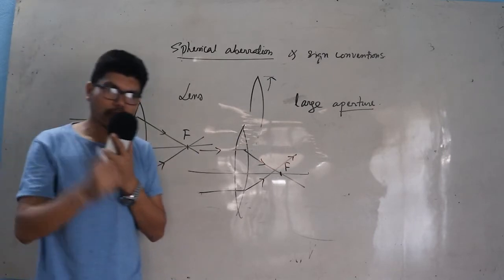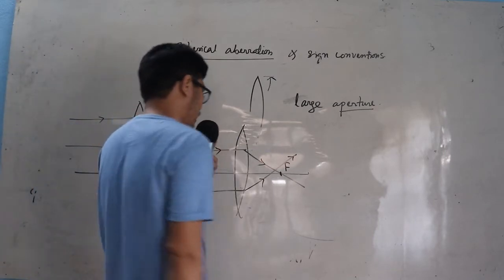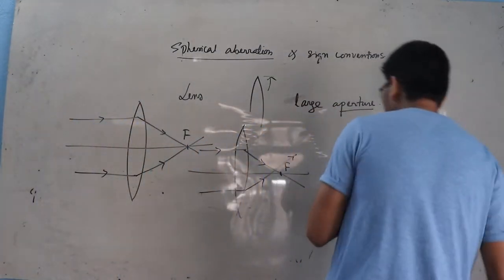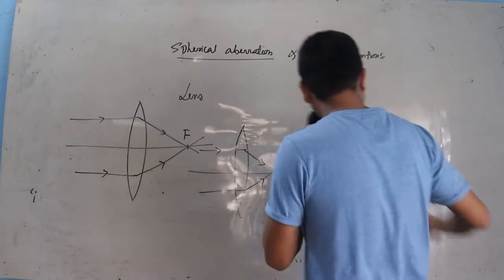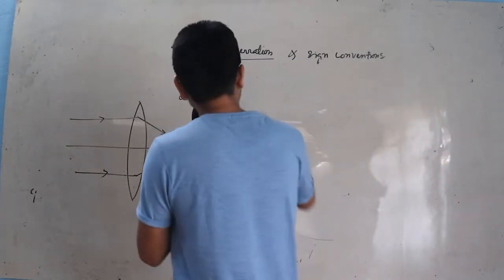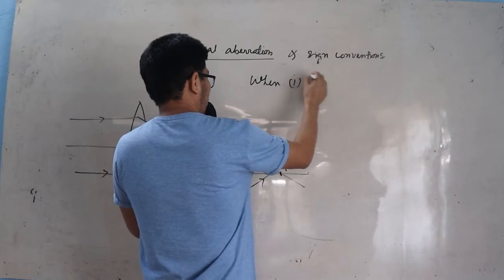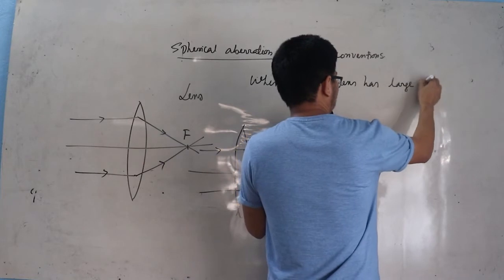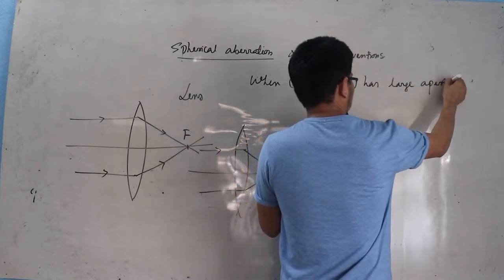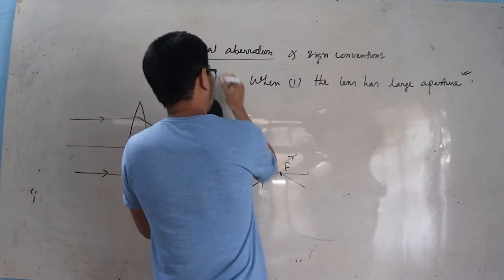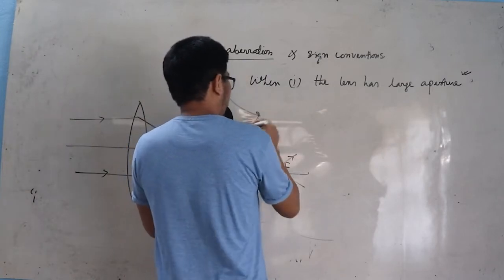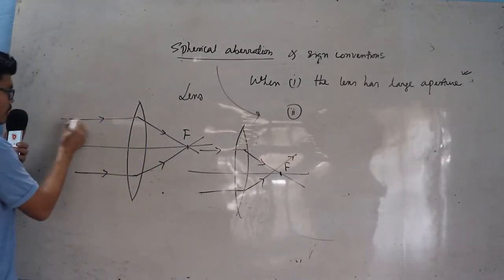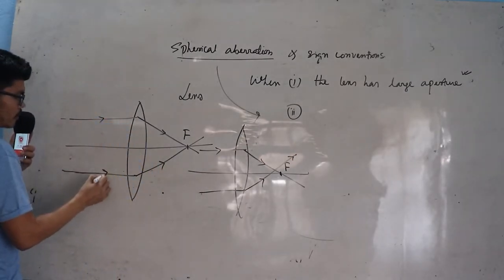For notes, please go through the web pages I sent to you. Spherical aberration appears in two cases: number one, when the lens has a large aperture, and number two, when the incident ray is not narrow.